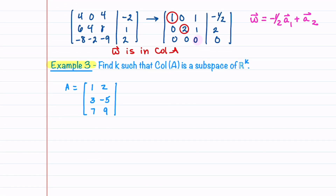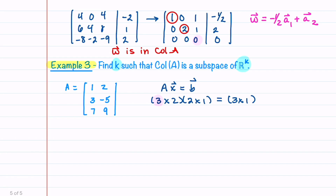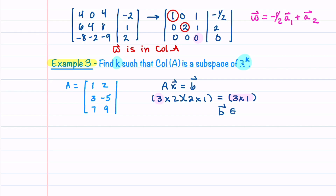In our last example, we're asked to find K such that Col(A) is a subspace of R^K. We look at the sizes of A, X, and B, since the column space is all solutions B to Ax = B. A is a 3×2 matrix, so X is a 2×1 column vector and B is a 3×1 column vector. Since A has three rows, B is an element of R^3, so the column space is a subspace of R^3 and K = 3.